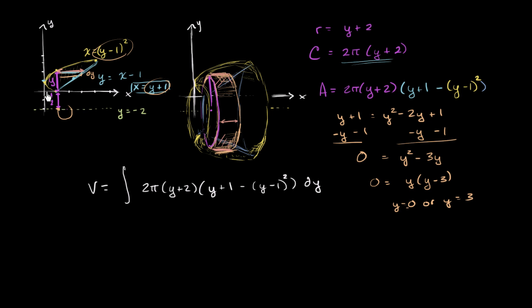And we see that right over here. When y equals 0, these two functions intersect. When y equals 0, and when y equals 3, these two functions intersect. So our interval is going to be from y equals 0 to y equals 3. So using the shell method, we have been able to set up our definite integral. And now we can think about how we can evaluate this thing.